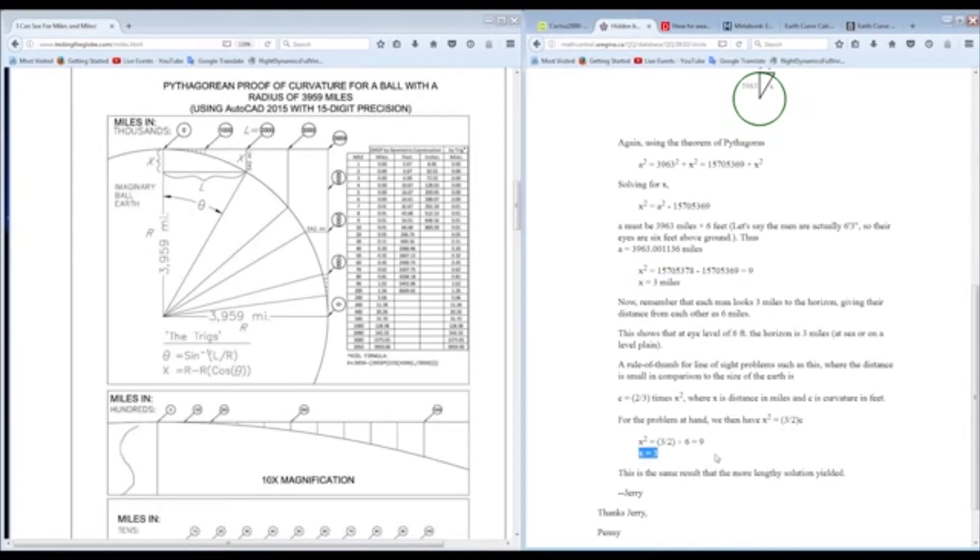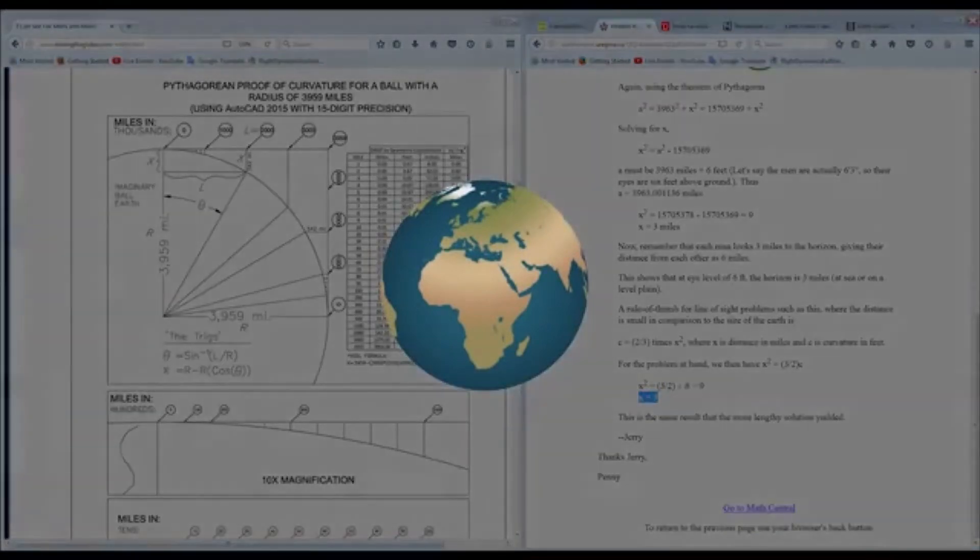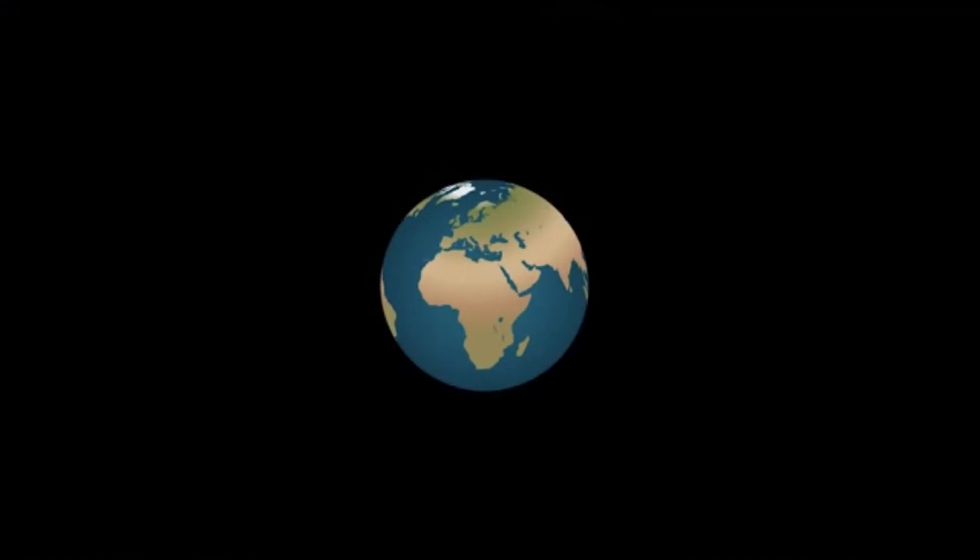So at 3 miles now, and we'll go back to our chart here, assuming your eye level is at the ground, 3 miles, 6 foot is obscured. Now this is what's interesting. And I'll create a little animation here for you to be able to visualize what I'm thinking here. And I'll let you think this through with me.